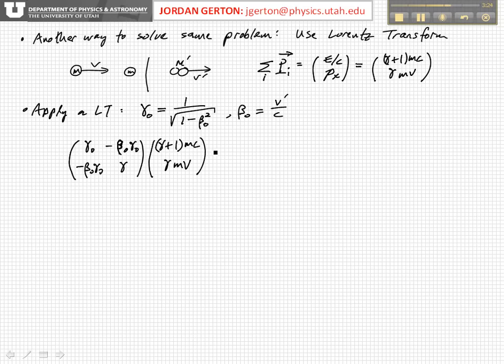And this will give you, let's just do the multiplication. Gamma zero times gamma plus 1 mc minus beta zero gamma zero gamma mv. And then the second one is minus beta zero gamma zero times gamma plus one times mc plus gamma zero gamma mv.